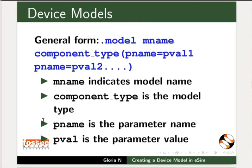The device model file begins with the .model statement. The model name indicates the model name, like diode model 1N4007 or 1N4148. Component type indicates the type of model used — for example, D is used for diode, M for MOSFET, and NPN or PNP for BJT. PName is the parameter name and PVAL is the parameter value.